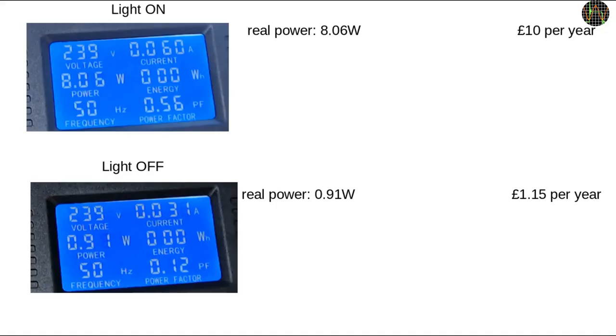Let me explain. Here are the displays of the power monitor for the two cases. The top one shows what is happening when the light is on. The light uses about 8W of real power which at the current average price per kWh in the UK will cost you £10 if you leave the light on for 1 year, 24 hours, day and night, 7 days a week.